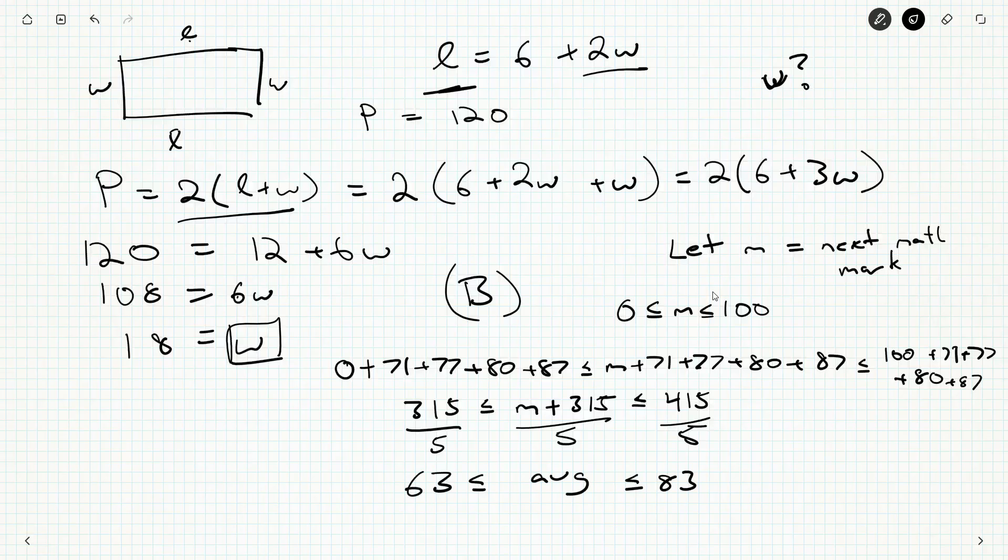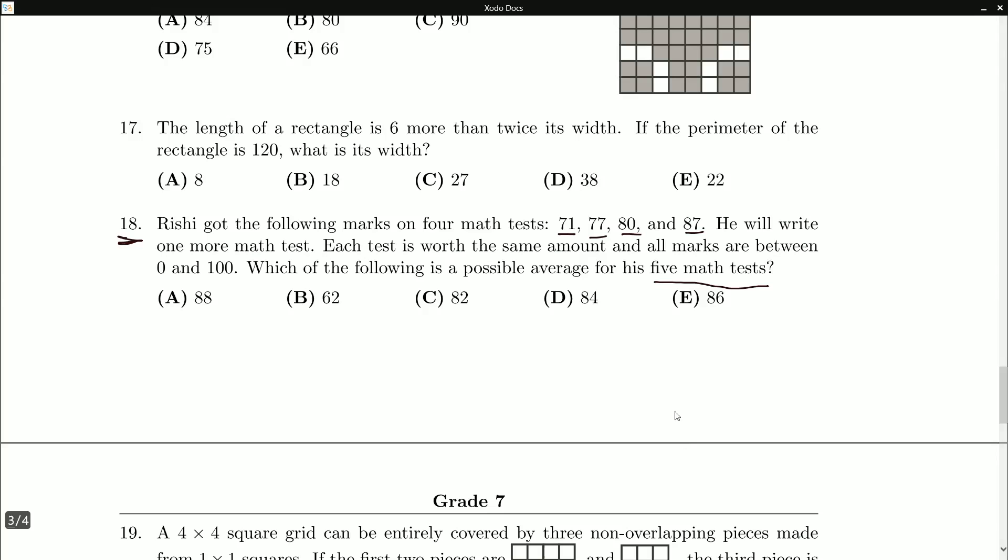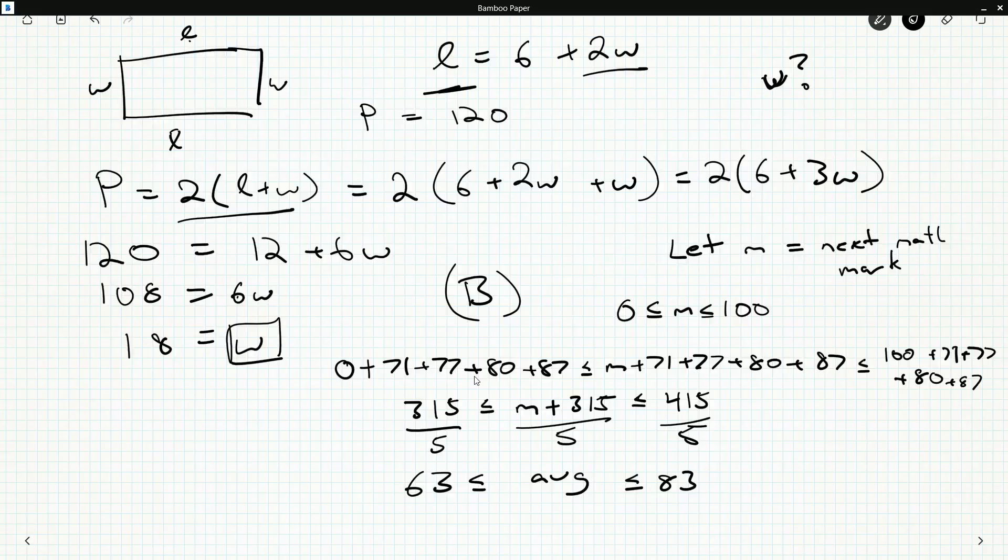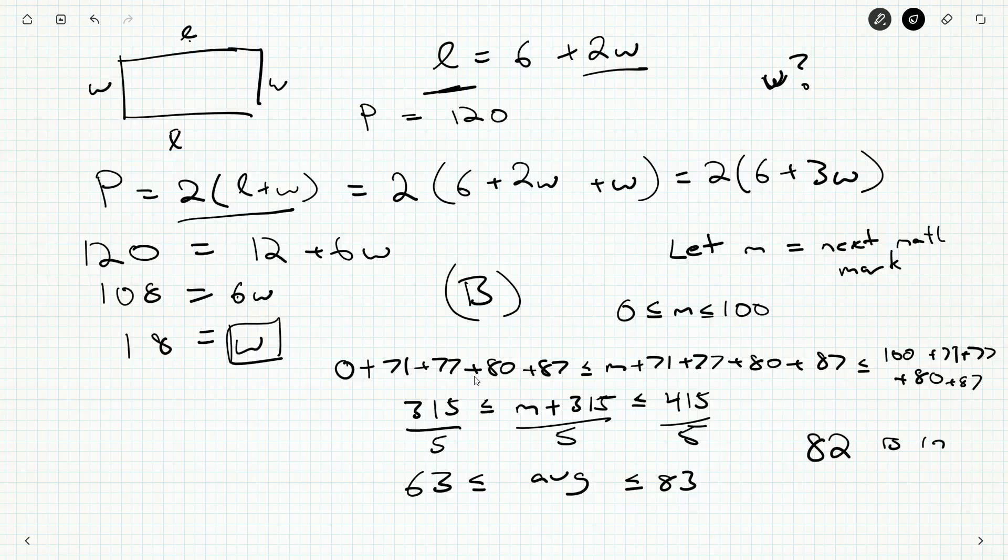So divide by 5. We get 83 is the most. And 315 divided by 5, what's the worst? 63. And that's where his average sits. So we're looking for numbers between 63 and 83. And there should only be one of these. 88? Nope. 62, that's too low. 84 is too much. 86 is too much. It's going to have to be 82 here. So 82 is in range. So that's C.